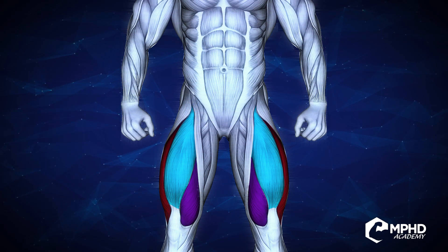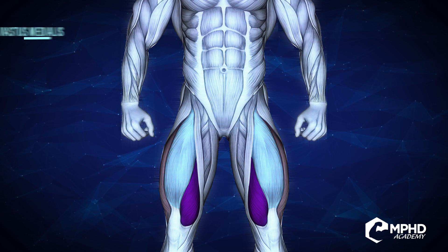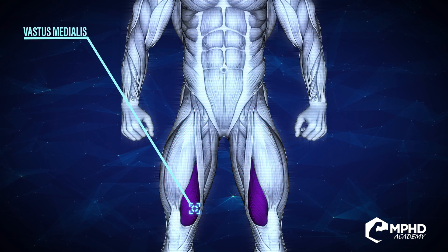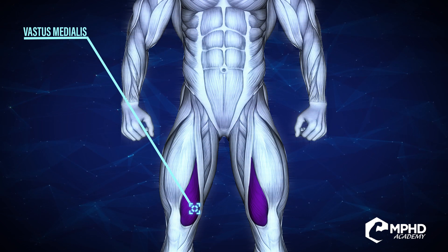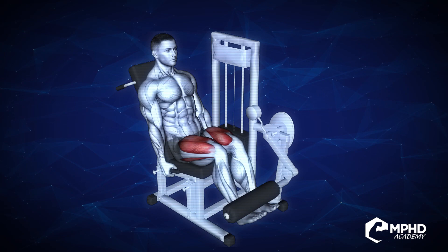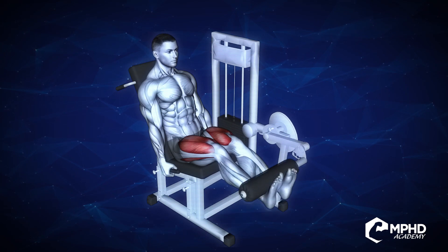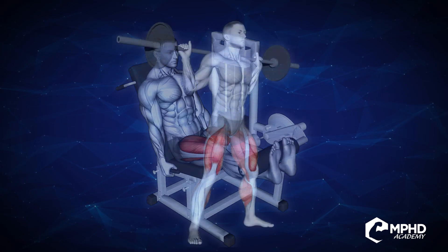First, let's talk about the vastus medialis — that is what's known to many as the teardrop. As it shows, it's on the medial side of the thigh. It extends the leg, as in leg extensions and in squats.